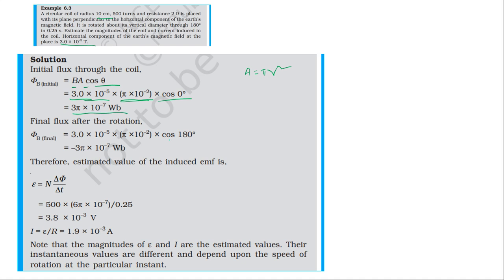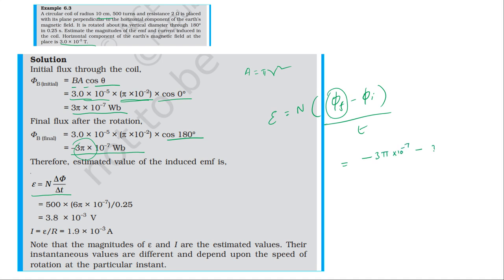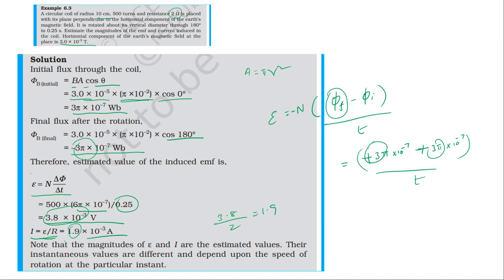The initial flux and final flux are calculated. The change in flux is: final flux (−3.5 × 10⁻⁷) minus initial flux (3.5 × 10⁻⁷). The induced EMF is the change in flux divided by time: (−3.5 × 10⁻⁷ − 3.5 × 10⁻⁷) / 0.25, giving approximately 3.8 × 10⁻³ V. The current is approximately 1.9 × 10⁻³ A, so the answer is 1.9 × 10⁻³ ampere.